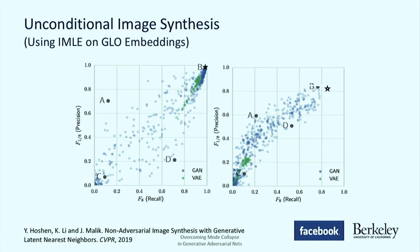That concludes my talk on generative models. Are there any questions before I move on to nearest neighbor search?